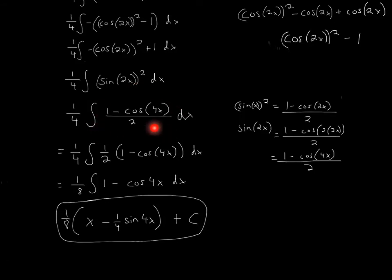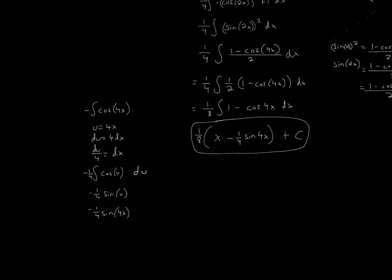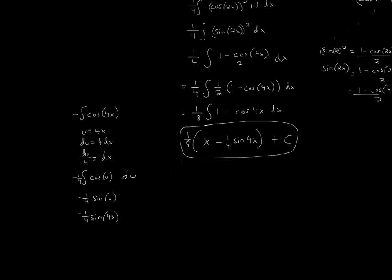Okay, so now we have that, 1 minus cosine 4x divided by 2. Now what we can do is u substitution. Or, first of all, we can pull out the 2. We can pull out the 2, so it would become 1 half, and all that would become 1 eighth.